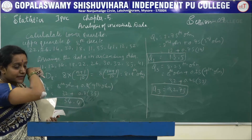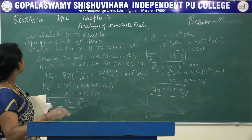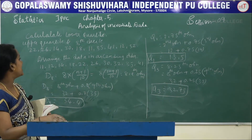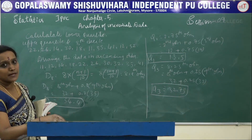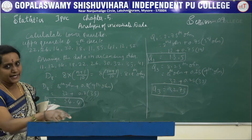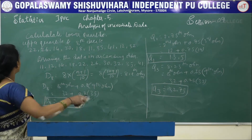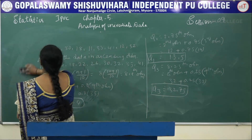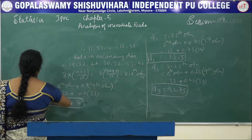This formula (n+1)/4 for quartiles and (n+1)/10 for deciles is used for raw (ungrouped) data. Next, we will solve problems on the discrete case.